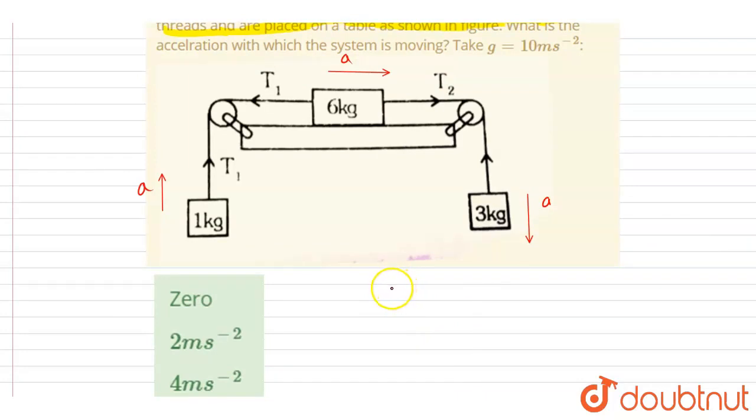If you see on the 3 kg, the downward force net downward forces equals to mass times acceleration. On the 6 kg block, net horizontal force is T₂ minus T₁, it is mass times acceleration. Again on the 1 kg it will be T₁ minus g, it is equals to ma.